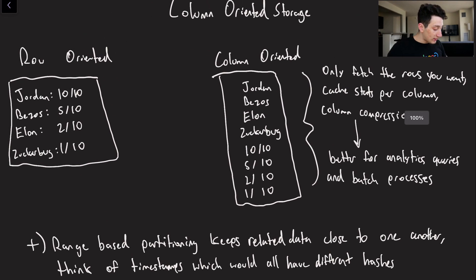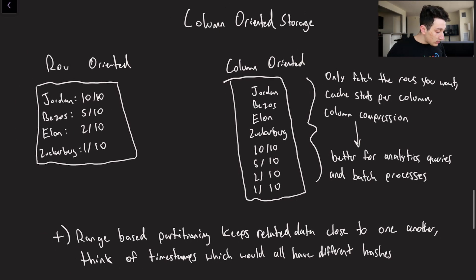Okay, so another key aspect of HBase that is super useful is that it uses column oriented storage. Now we've spoken about this a decent amount in the past, especially when it comes to parquet, which is an open source way of performing column oriented storage. Parquet files are a type of file.